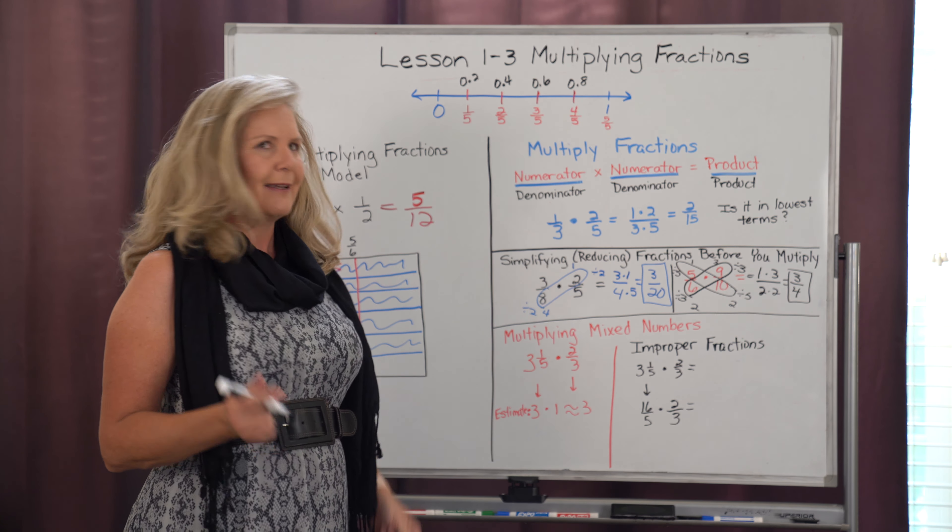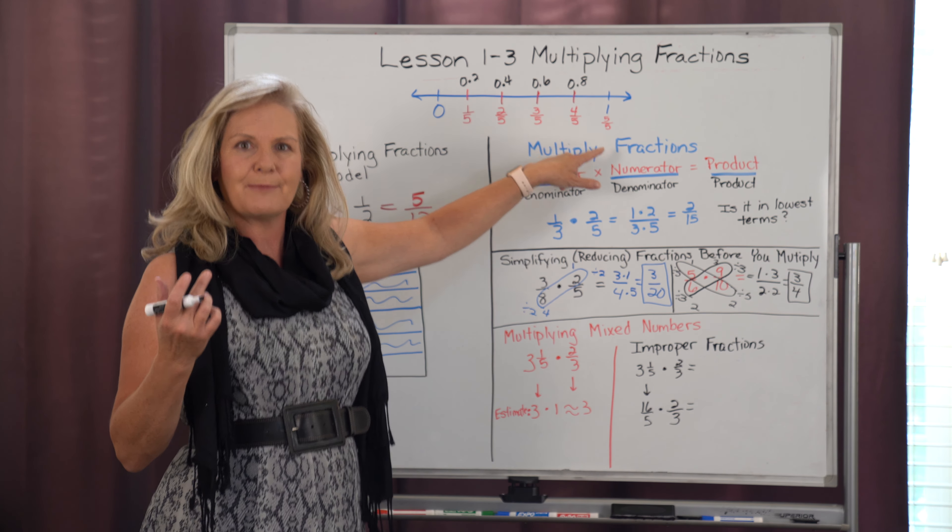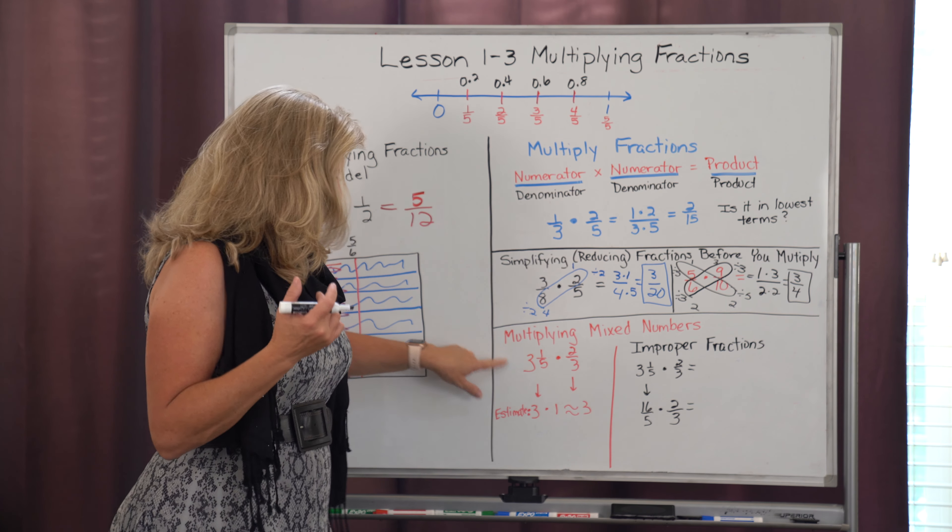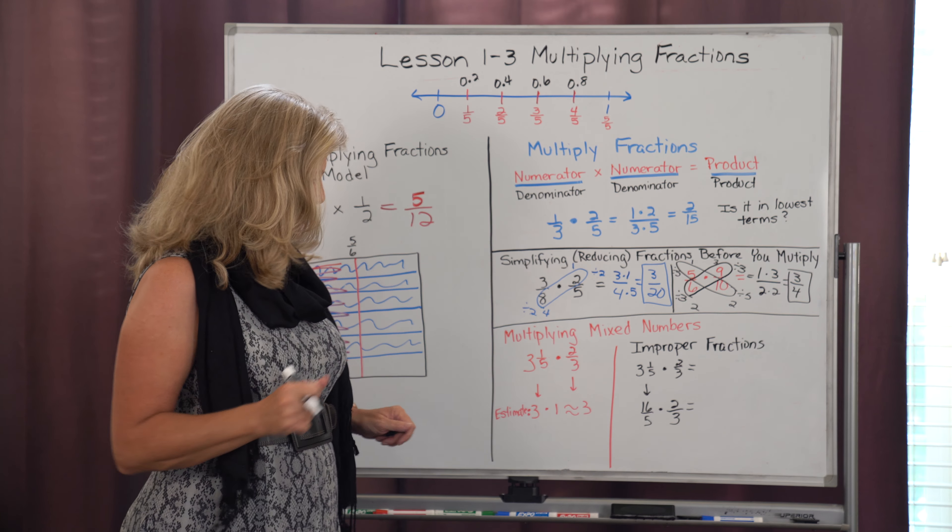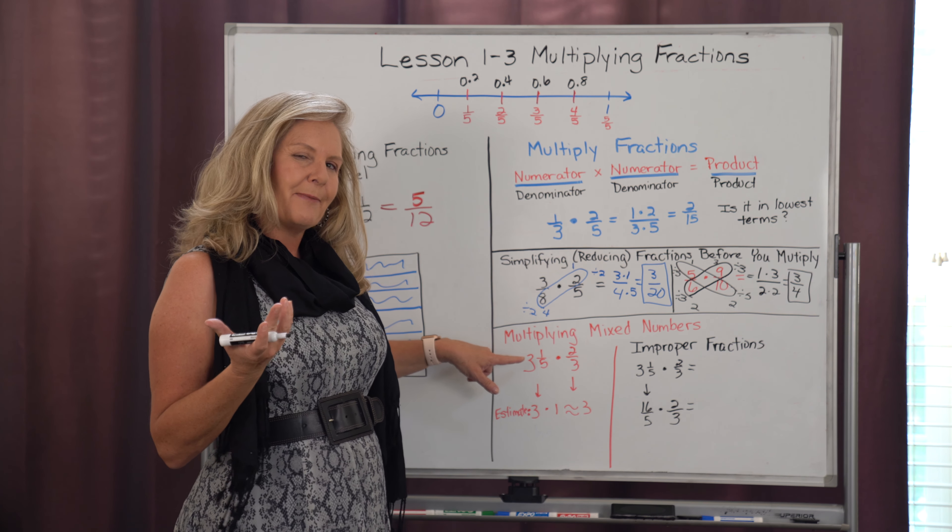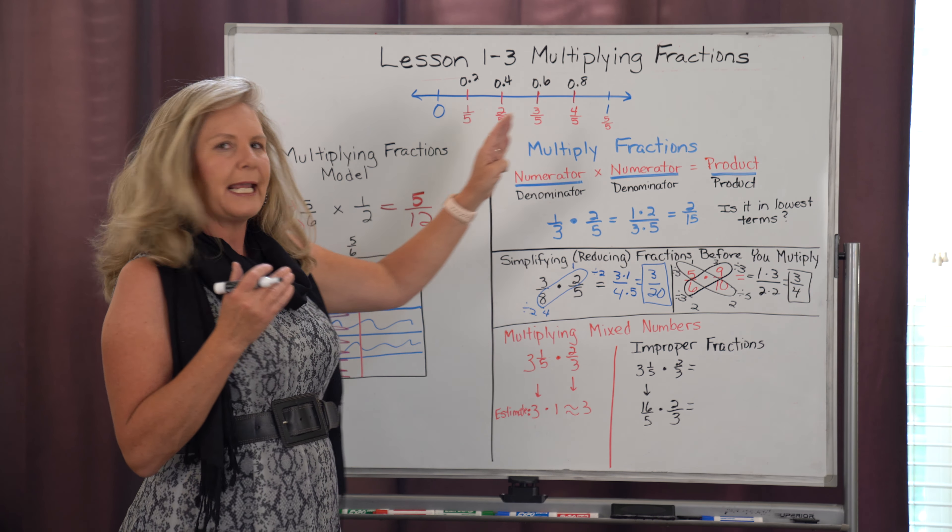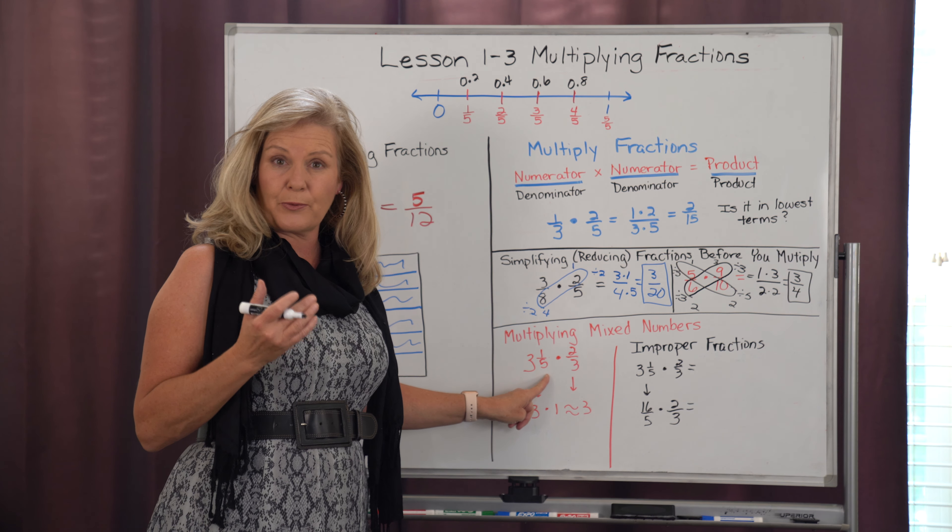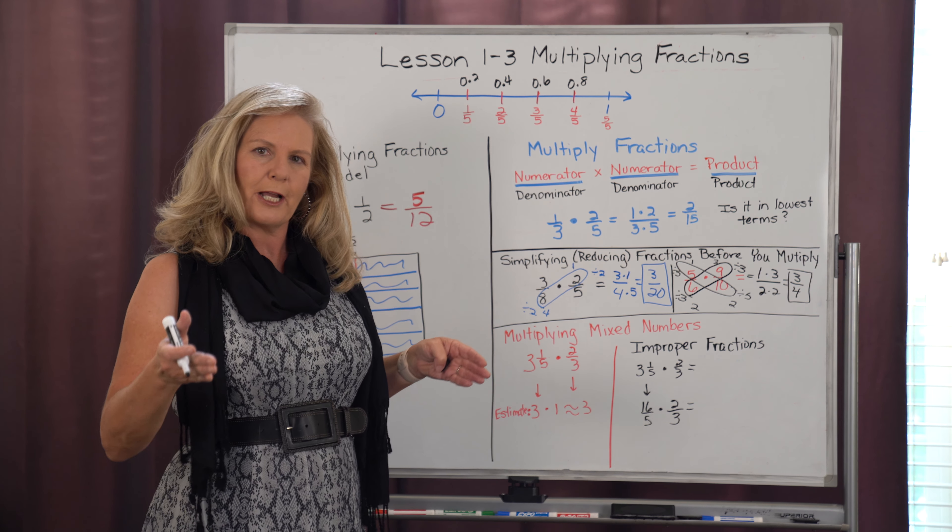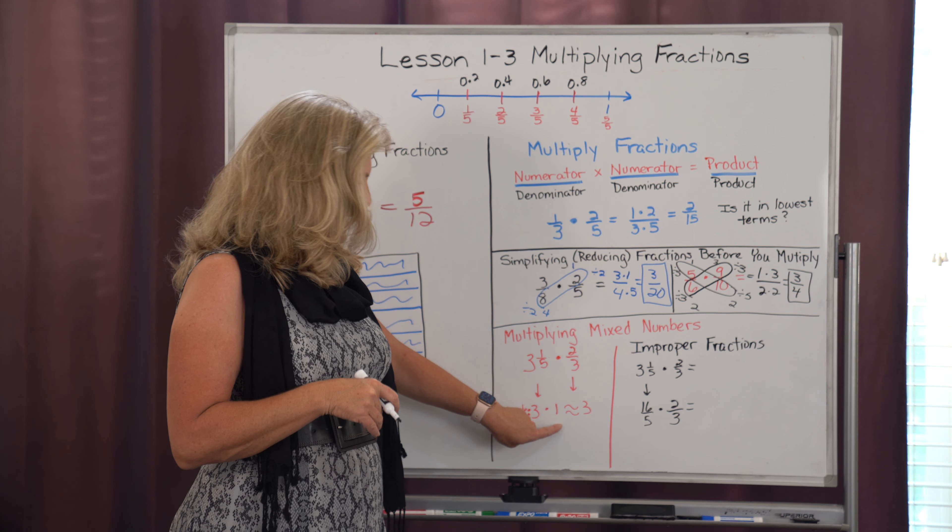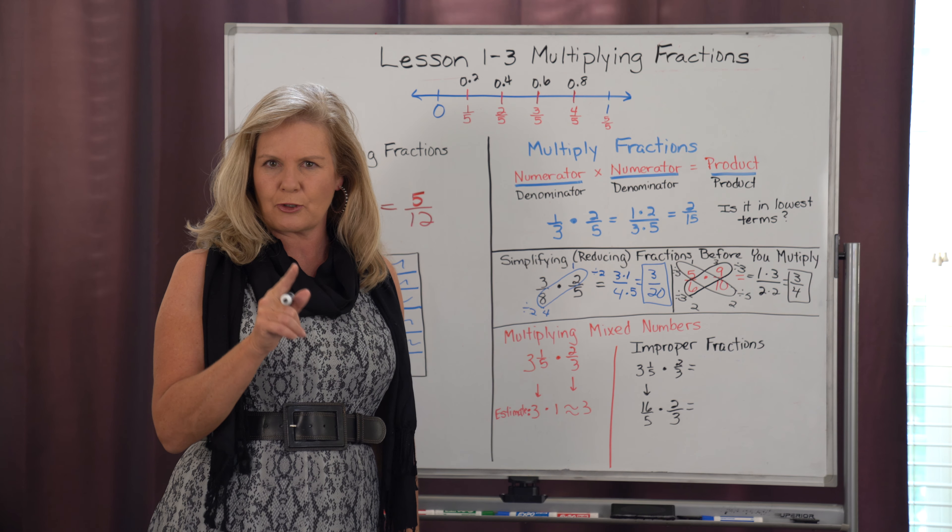So our last part of this is what if we have a mixed number? Well, we know we only can have a numerator times a numerator and a denominator times a denominator. So when I have a mixed number, I have a whole number with a fraction with a numerator and a denominator. Well, I can't have that. I've got to have a single numerator. So what I want to do is first I want to estimate and think, okay, what kind of should my answer be? So 3 and 1 fifth. Well, that means this number is between 3 and 4 on the number line. Well, it's much closer to 3 than it is to 4. So I'm going to estimate 3 and 1 fifth as 3. And 2 thirds is between 0 and 1 on the number line. But it's much closer to 1. So I'm going to estimate 2 thirds is 1. So 3 times 1 should be about 3. I know my answer has got to be closer to 3 than any other number.